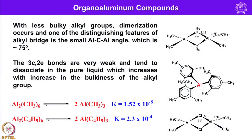For organoaluminum compounds with less bulky alkyl groups, dimerization occurs. One of the distinguishing features of the alkyl-bridged structure is the small Al–C–Al angle, which is 75 degrees. Carbon is tetrahedral, but the angle is very small because two smaller aluminum ions in their +3 state come very close to each other, causing this angle to shrink to as low as 75 degrees. These three-center two-electron bonds are very weak and tend to dissociate in the pure liquid, which increases with the bulkiness of the alkyl groups.